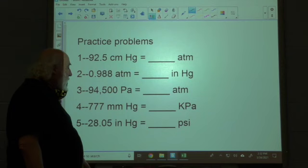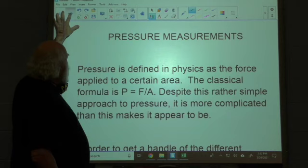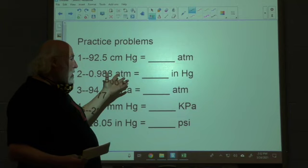So we have some practice problems to do here. I'm giving you five practices. Here's an example. Did I use an example? I thought I had one. I did not. Okay. But these are all conversion problems. One atmosphere is equal to such and such number of centimeters of mercury or something like that. Have fun.